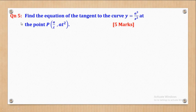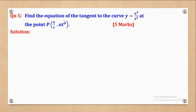We shall start with question 5. Question 5 said: find the equation of the tangent to the curve y equal to a cubed over x squared at the point p, which is (a/t, at²). I gave it 5 marks, so let's see how the 5 marks come about.